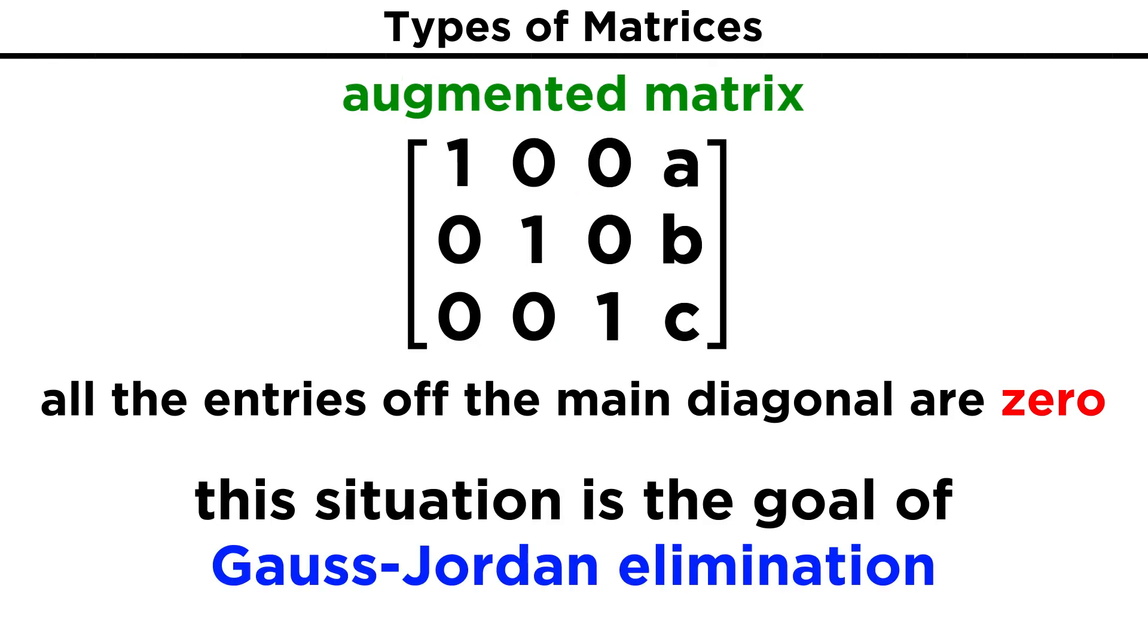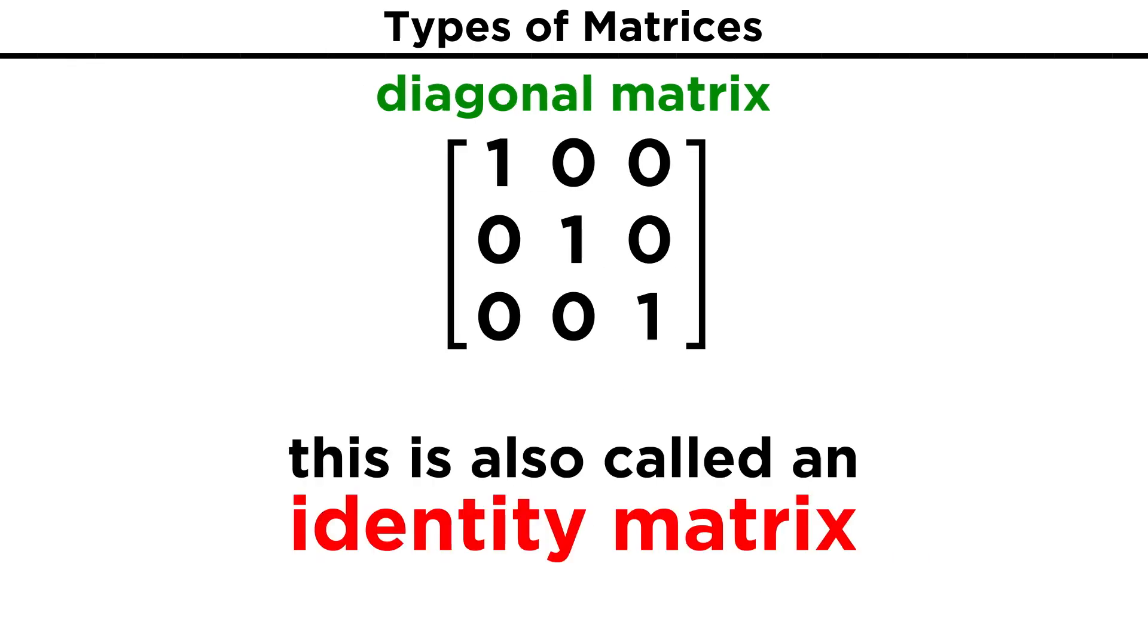This is the situation we are trying to get with an augmented matrix when performing Gauss-Jordan elimination, where all the entries on the main diagonal are one, and the rest are zero, apart from the rightmost column, and if we are just looking at a coefficient matrix that looks like this, we can also call this an identity matrix.